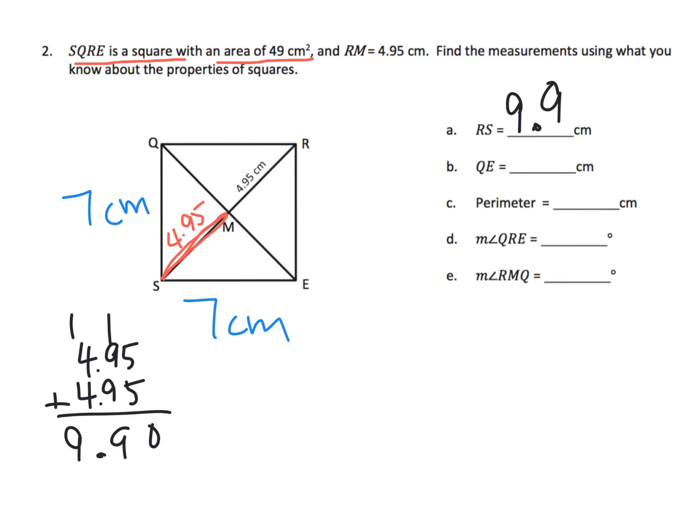Now how about QE? Where's QE? Well, QE is right here. Well, we know in a square, those diagonals are supposed to be the same. Same length. This entire diagonal and this entire diagonal. Now what's the perimeter? Well, we know if this is 7 and this is 7 and this is 7 and this is 7, so now we have to add up four 7s. So 7 times 4 equals 28. So we know that the perimeter is 28.